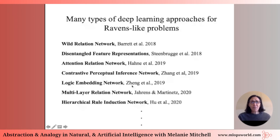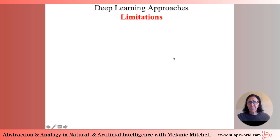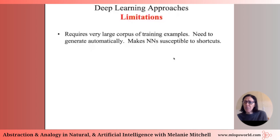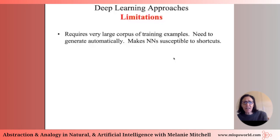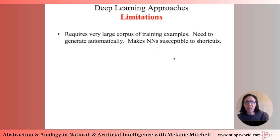There are some limitations to the deep learning approach. First, it requires a very large corpus of examples that need to be generated automatically. We don't know exactly what the machines have learned. And if the goal is general human-like abstraction abilities, does it even make sense to train on tens of thousands of examples? Abstraction and analogy should essentially be about few-shot learning — training on only a few examples.